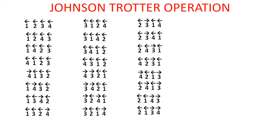Now when we try to apply the three steps to this permutation, we are unable to find a mobile component. Two is not a mobile component, 1 is not a mobile component, 3 is not a mobile component, and 4 is also not a mobile component. Whenever we cannot find a mobile component, that is the end of the permutation generation. For {1, 2, 3, 4} we have 24 permutations.